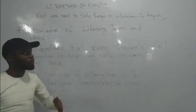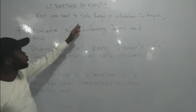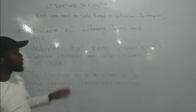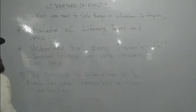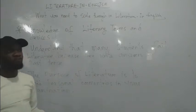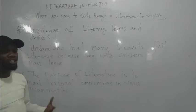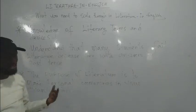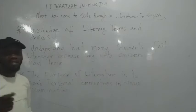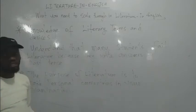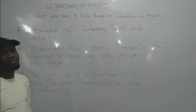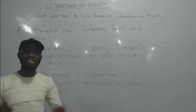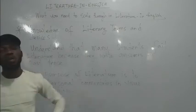Today we'll talk about what you need to scale through in literature and English. When you get to the exam and look back at how far you have prepared, what are the essential things you need that will help you as a student, whether you're going to write both objective and theory? I hear this question all the time: what should I read? What aspects should I read in literature? What exactly is needed?